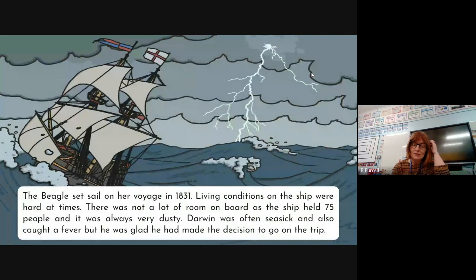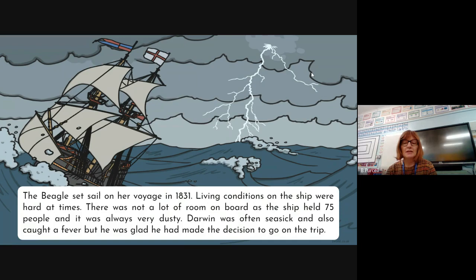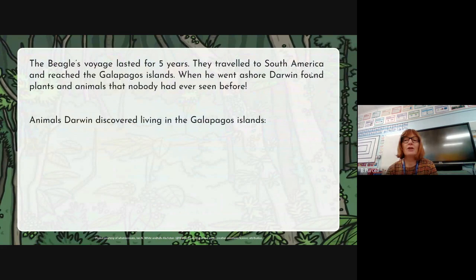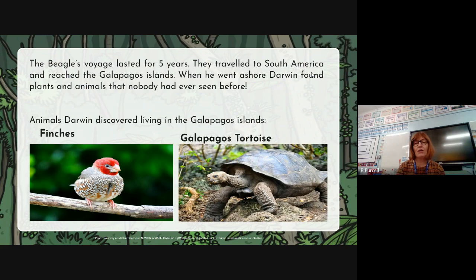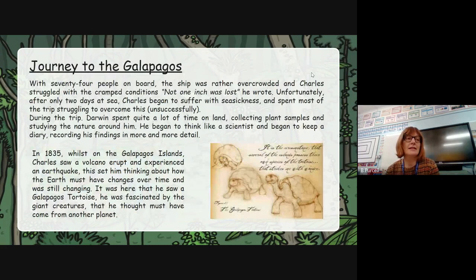So on that page I've developed the information I've used, and I have cohesive paragraphs. I haven't just used sentences found from the internet — I've built cohesive facts and put them into my own words. This was my slide last week — again, no subheading. 'The Beagle set sail for her voyage in 1831. Living conditions on the ship were hard at times. There was not a lot of room on board as the ship held 75 people, and it was always very dusty. Darwin was often seasick and also caught fever, but he was glad he made the decision to go.' So the Beagle voyage lasted five years. They travelled to South America and reached the Galapagos Islands, where Darwin found plants and animals he'd never seen before. I've taken those two slides and created a much more condensed, informative slide.